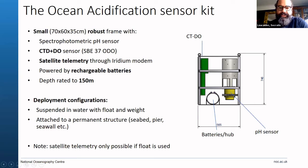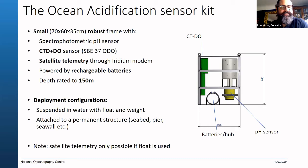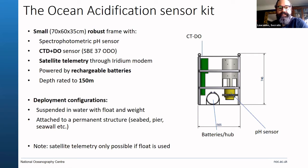Here you see a drawing of the second version of the ocean acidification sensor kit. It's basically a stainless steel frame — fairly small, like a small piece of luggage. It has a pH sensor on the right, a sensor that measures temperature, salinity, and dissolved oxygen, and a battery pack. Both the pH sensor and the CTD sensor are really high quality, state-of-the-art sensors that can make these measurements with very high accuracy and precision.